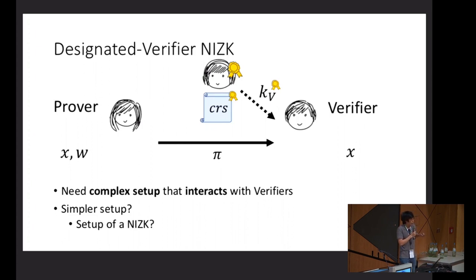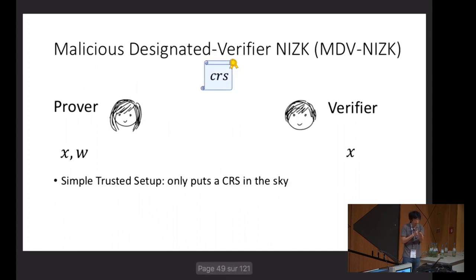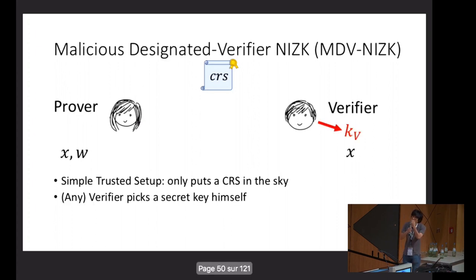In particular, it would be nice if we could make something work simply by using the setup of a NIZK. That actually defines naturally the notion of a malicious designated verifier NIZK, where the setup is really just a CRS. There's a magical source entity that publishes a CRS in the sky, and after that, it can go offline. Any verifier can just look at this CRS and pick himself a secret key.